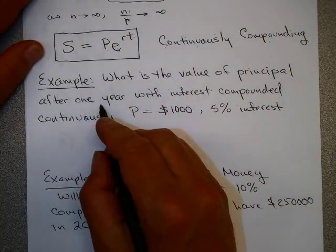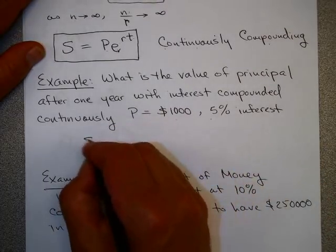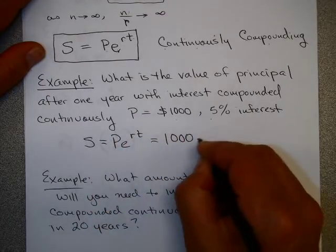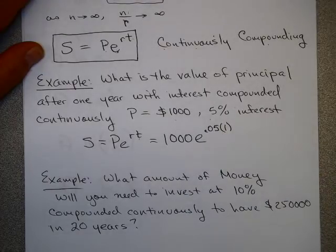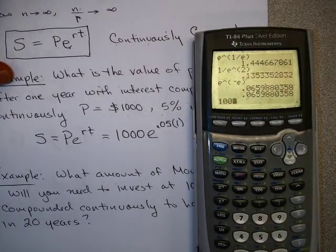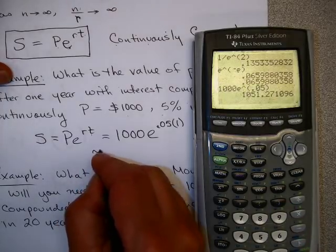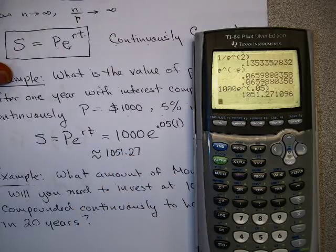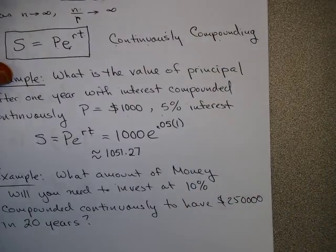What is the value of principle after one year with interest compounded continuously, where P is $1,000 and 5% interest? I'm going to use this formula: 1,000 times e^(0.05 times 1). Use your calculator. This tells me that this is about $1,051.27. You can see that that's very close to what we were looking at before. That is our upper limit on that example.